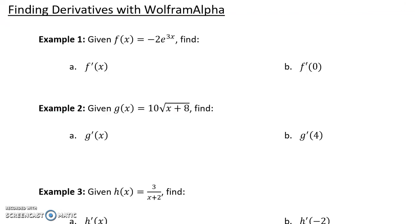So we find that our derivative function is negative 6 e to the 3x. And when we evaluate that derivative function at 0, we get negative 6.